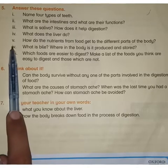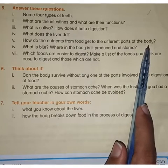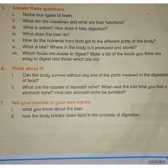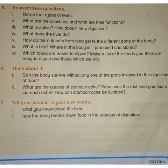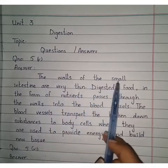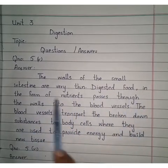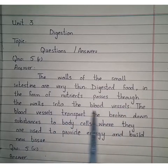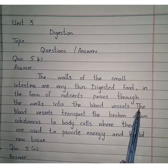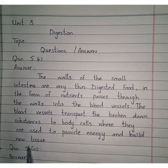Question number 5: How do the nutrients from food get to the different parts of the body? The answer is: the walls of the small intestine are very thin. Digested food in the form of nutrients passes through the walls into the blood vessels. The blood vessels transport the broken down substances to body cells where they are used to provide energy and build new tissue.